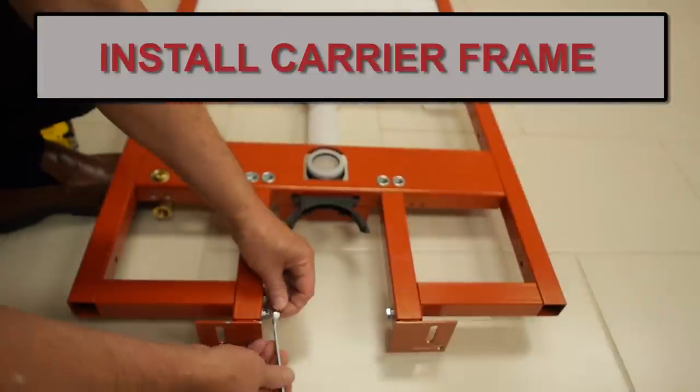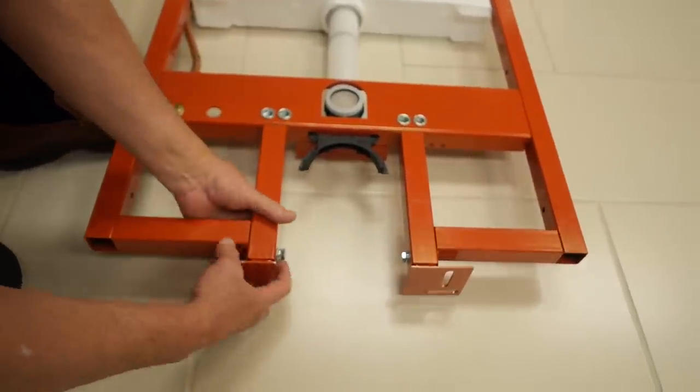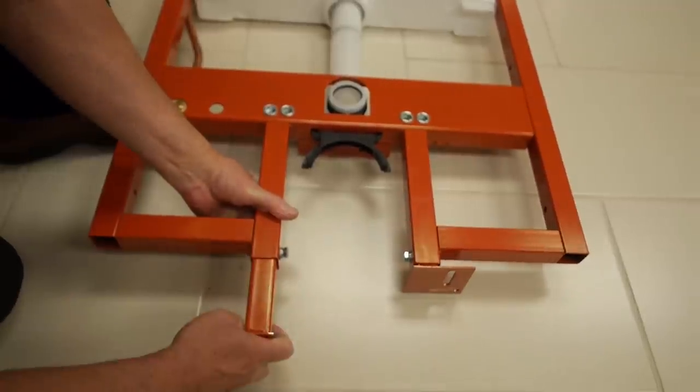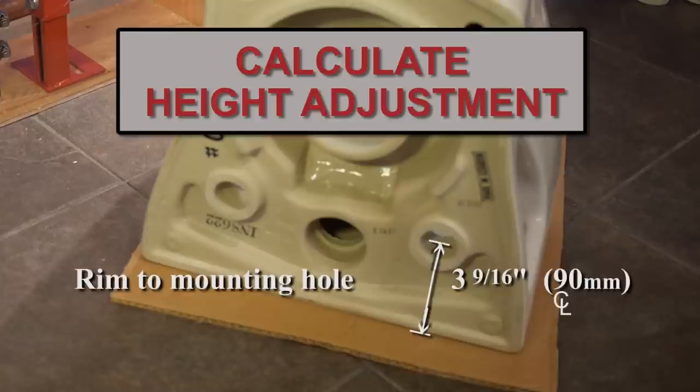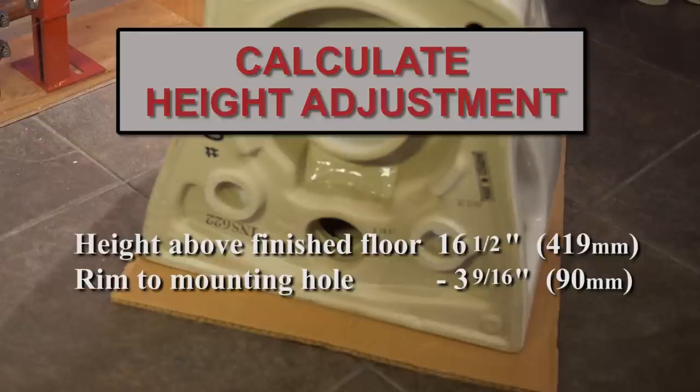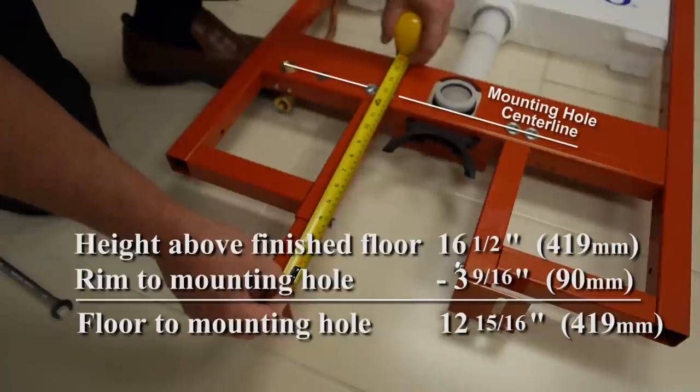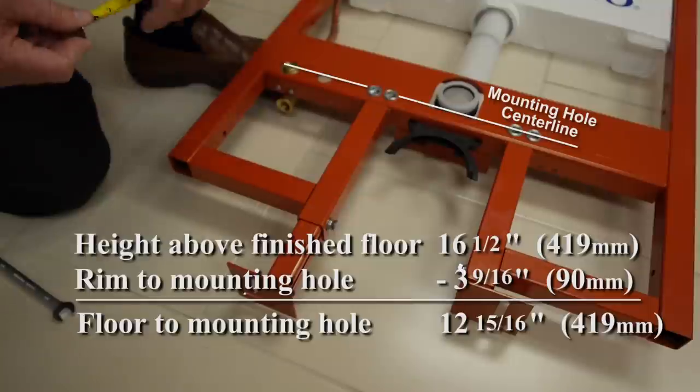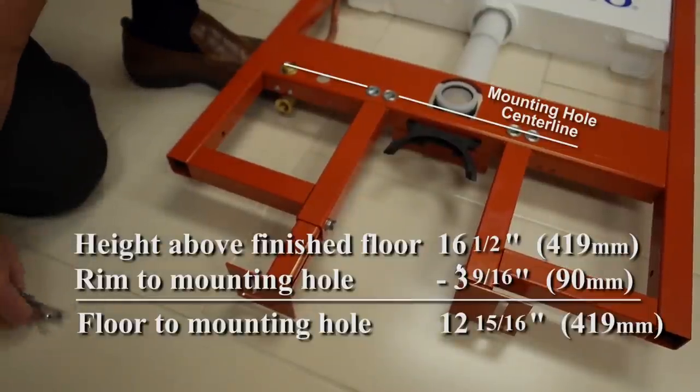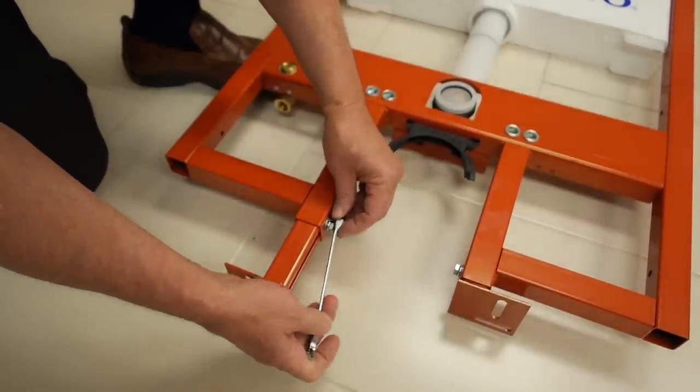Before you install the carrier frame, loosen the bolts holding the adjustable legs of the carrier and adjust them to raise the carrier. Subtract the distance from the rim to the toilet mounting holes from the desired height above the floor and use this measurement to adjust the legs below the center line of the toilet mounting holes in the frame. If the floor is not yet finished, you'll also need to compensate for the thickness of the material that will be used. Then tighten the two bolts.